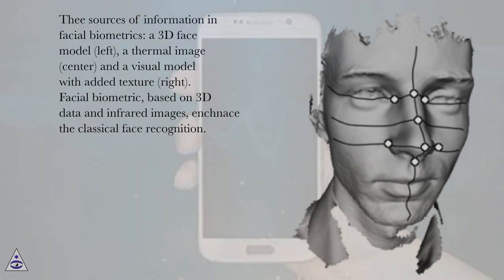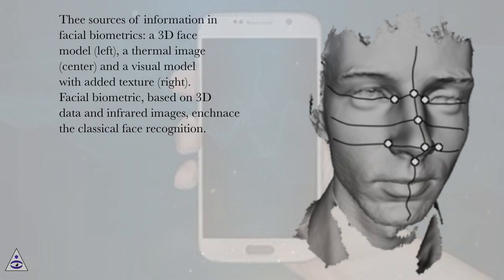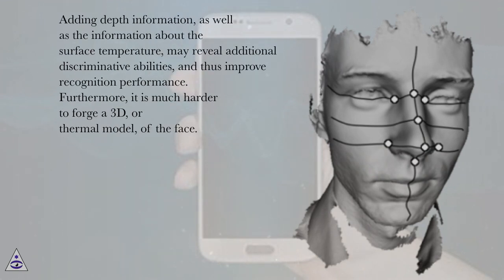The sources of information in facial biometrics: a 3D face model on the left, a thermal image in the center, and a visual model with added texture on the right. Facial biometric, based on 3D data and infrared images, enhances the classical face recognition. Adding depth information, as well as the information about the surface temperature, may reveal additional discriminative abilities, and thus improve recognition performance. Furthermore, it is much harder to forge a 3D or thermal model of the face.